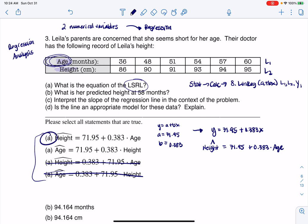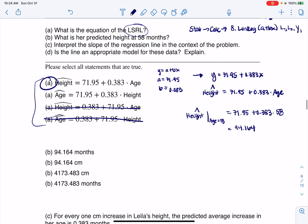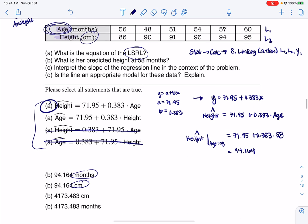Alright, and then the next thing says, hey, what's her predicted height at 58 months? Well, let's just plug 58 months in there. So if I want her height when her age is 58, that is going to be 71.95 plus 0.383 times 58. And when I crunch that number on my calculator, I'm going to get 94.164. And that's one of the options here. You can see there's two numerical options and then we need to figure out the units. Now is height in months, or is it in centimeters? Well, if we look back up, height's in centimeters, and that makes sense. You're going to be this tall, so there's our answer.